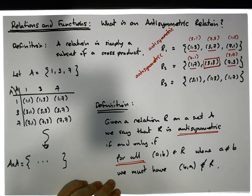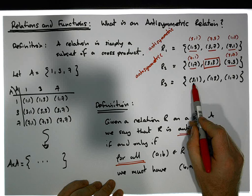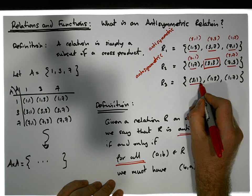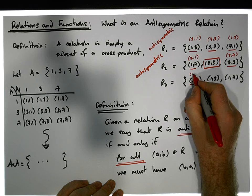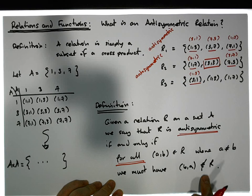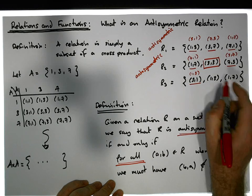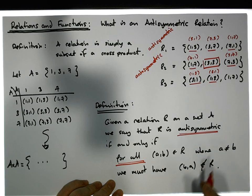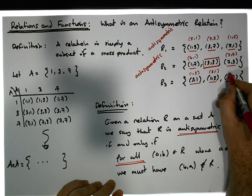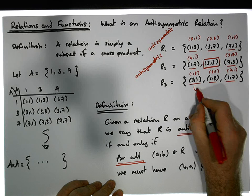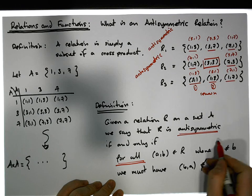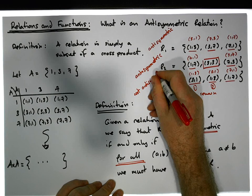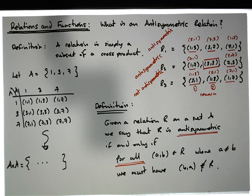Finally, OR3 = {(3,1), (1,3), (1,7)}. All three pairs have a ≠ b, so all three must be tested. Flip (3,1) → (1,3): yes, (1,3) IS in OR3 — that already means it's not anti-symmetric. Flip (1,3) → (3,1): also in OR3 — a second violation. Flip (1,7) → (7,1): not there, but we already have two reasons. So OR3 is NOT anti-symmetric.